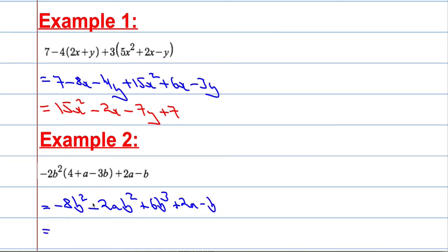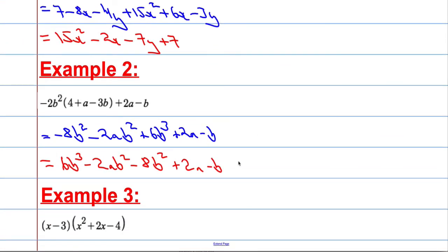We still have this plus 2a minus b part. Now we're going to collect like terms together. Let's start with the highest power, which would be this 6b cubed. So we get 6b cubed minus 2ab squared. Actually there was no improvement going from this line to this line, so we've got time wasted there. Anyway, Example 3.